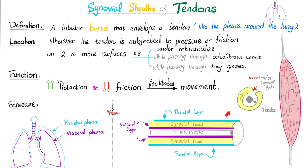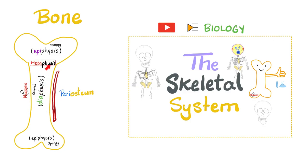Just like with the abdominal peritoneum — where there is mesosalpinx, meso-appendix, and meso-anything — we also have a mesotendon. It's a fold in the synovial sheath. Why do you need a fold? To create an opening so we can get blood supply to the tendon, coming from the nearby bone. Because bone is vascular, but cartilage is avascular. Check out my skeletal system video in my biology playlist for more on bones and cartilages.